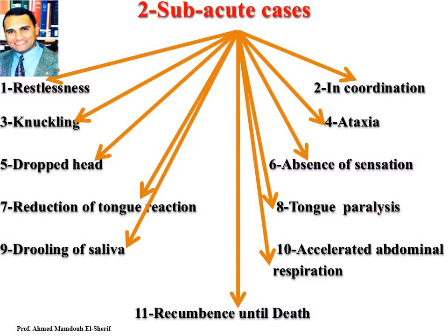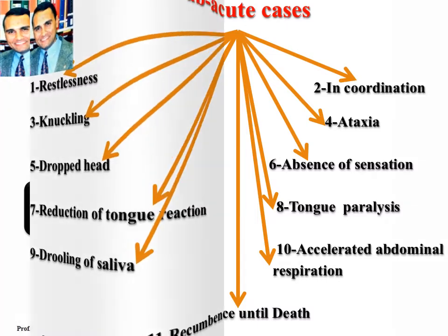In sub-acute cases of botulism, the following clinical signs may be seen: restlessness, incoordination during walking, knuckling, ataxia, dropped head, absence of sensation all over the body, reduction of tongue reaction, tongue paralysis, drooling of saliva, accelerated abdominal respiration, and then recumbency until death.